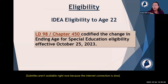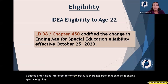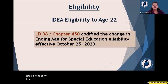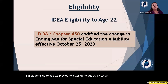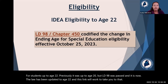MUSER is being updated and goes into effect tomorrow due to a change in ending special ed eligibility. For students up to age 22 — previously it was up to age 20 — LD 98 was passed and the law has been updated to age 22. This link will take you to that law if you'd like to look at it.